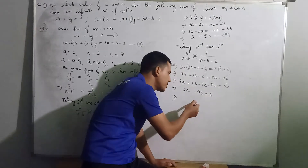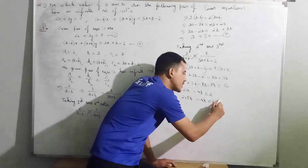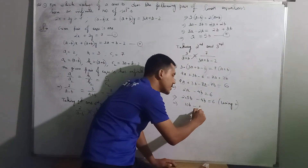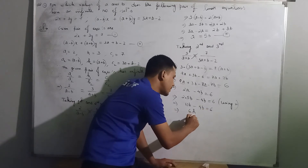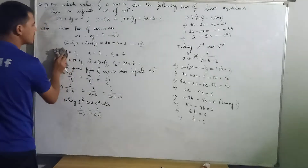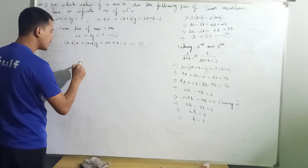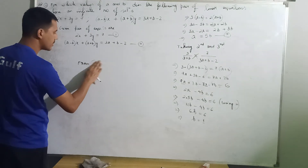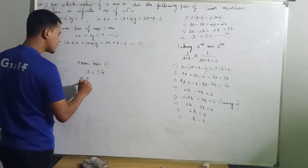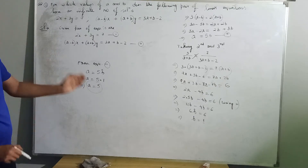Using equation 3, substituting A as 5B: 2 times 5B is 10B, minus 4B equals 6, so 6B equals 6, giving B equal to 1. The value of B has been obtained, which is equal to 1. From equation 3, A equals 5 times B equals 5 times 1, so A equals 5. Therefore, the required values are A is 5 and B is 1.